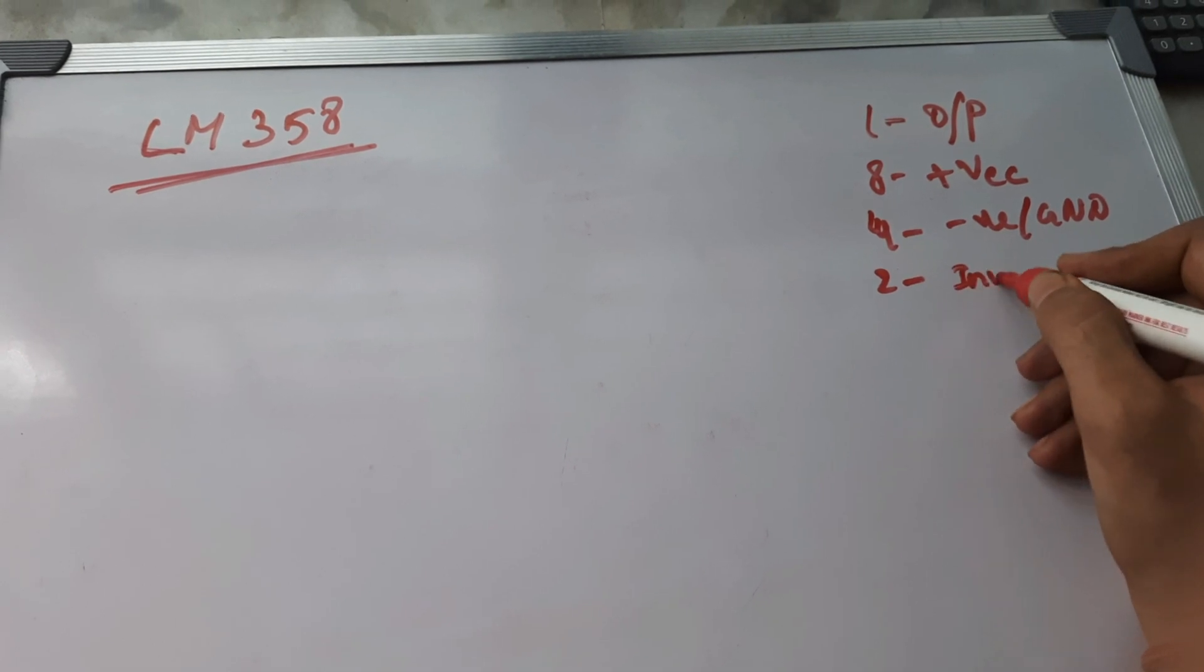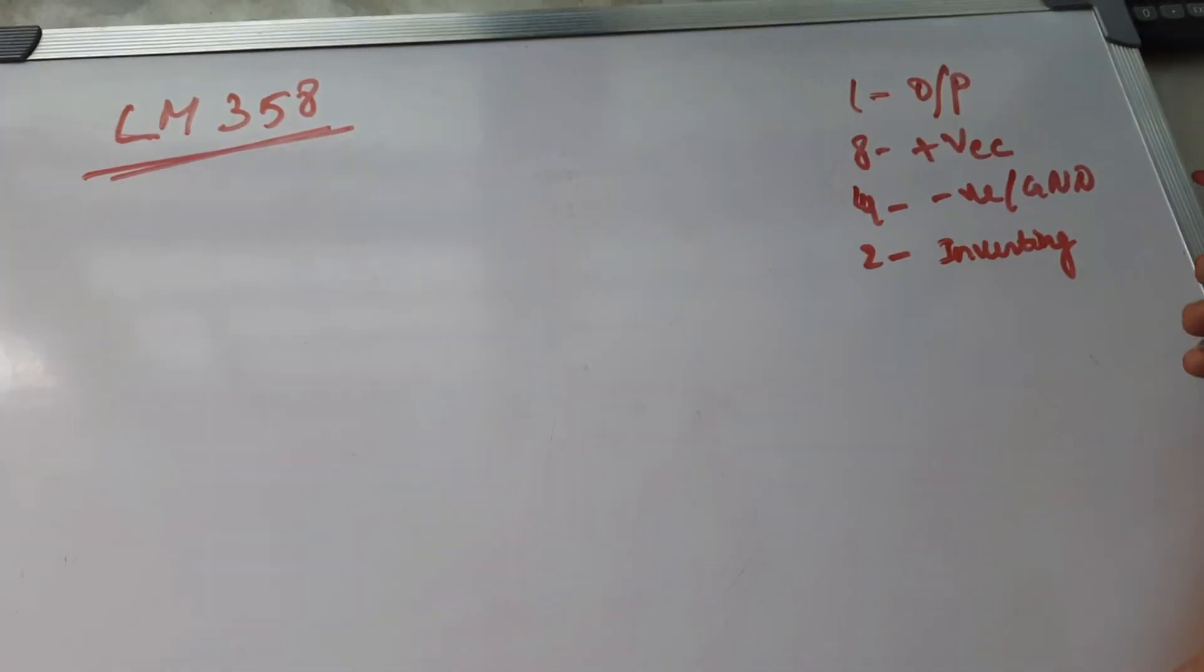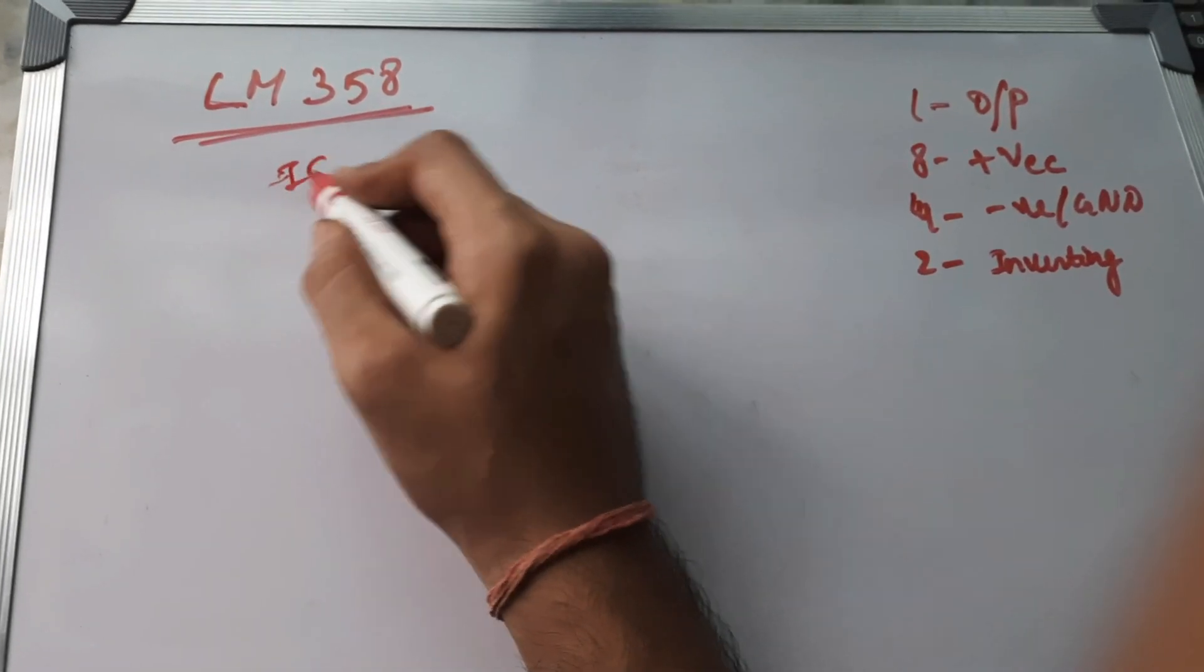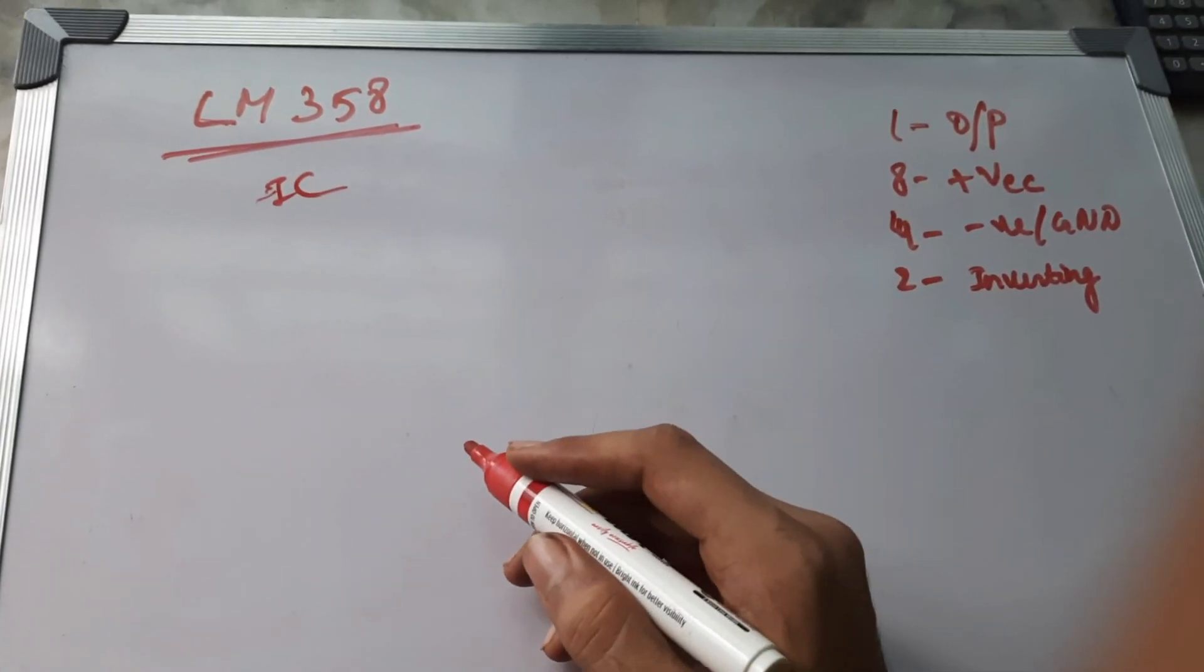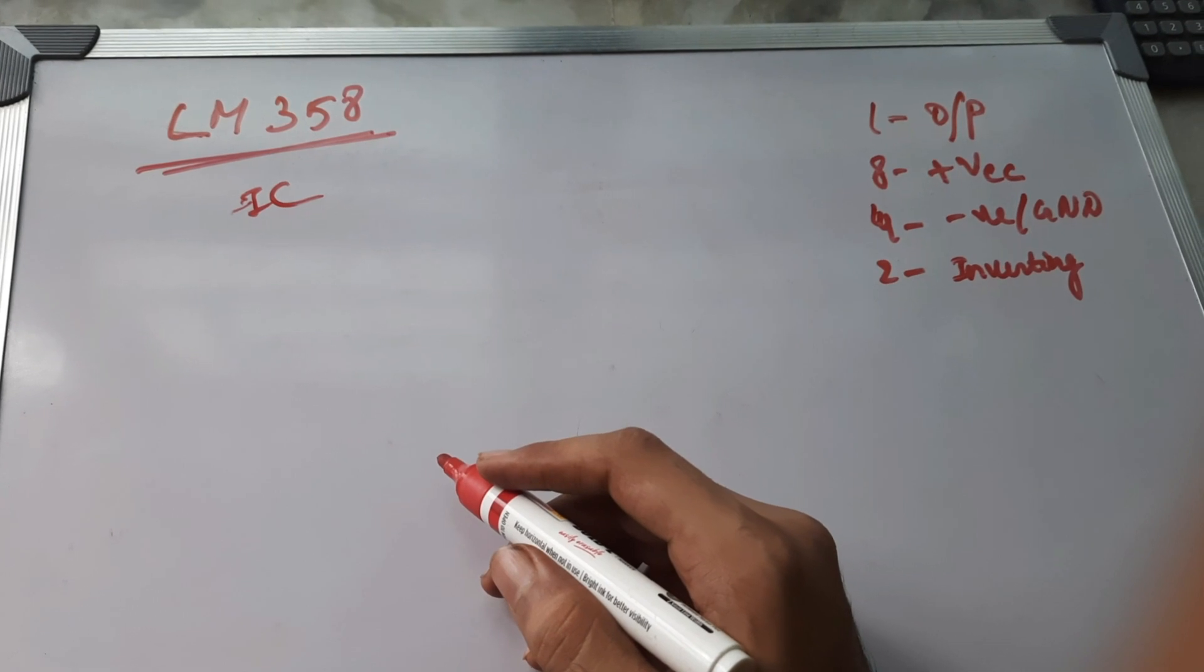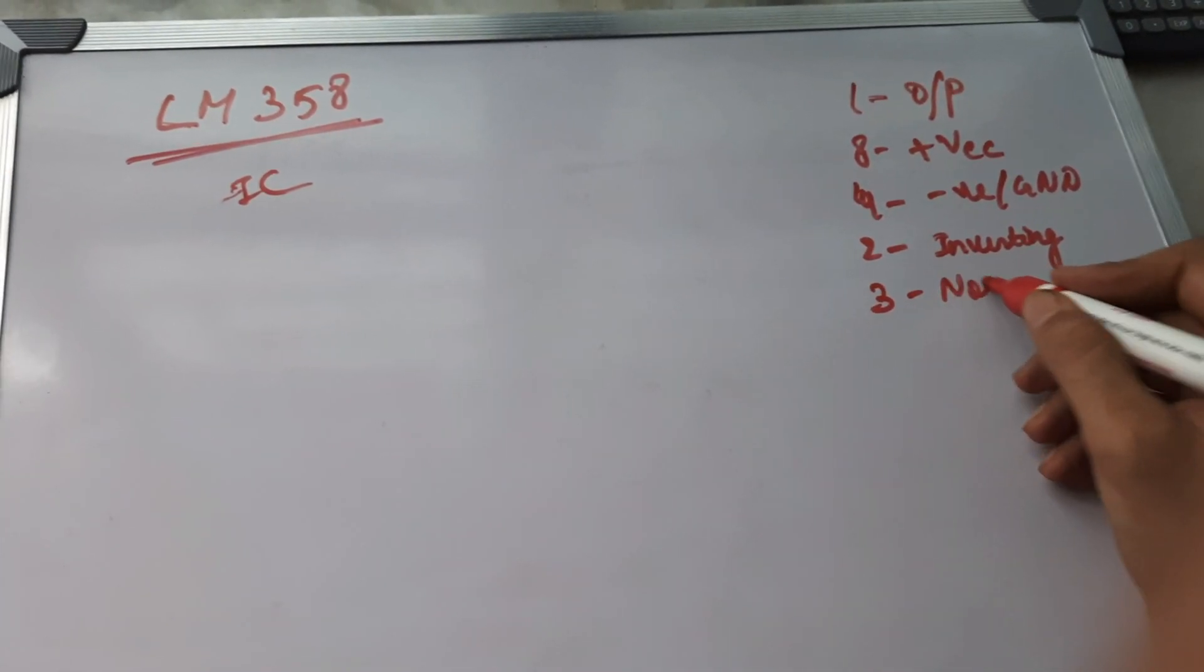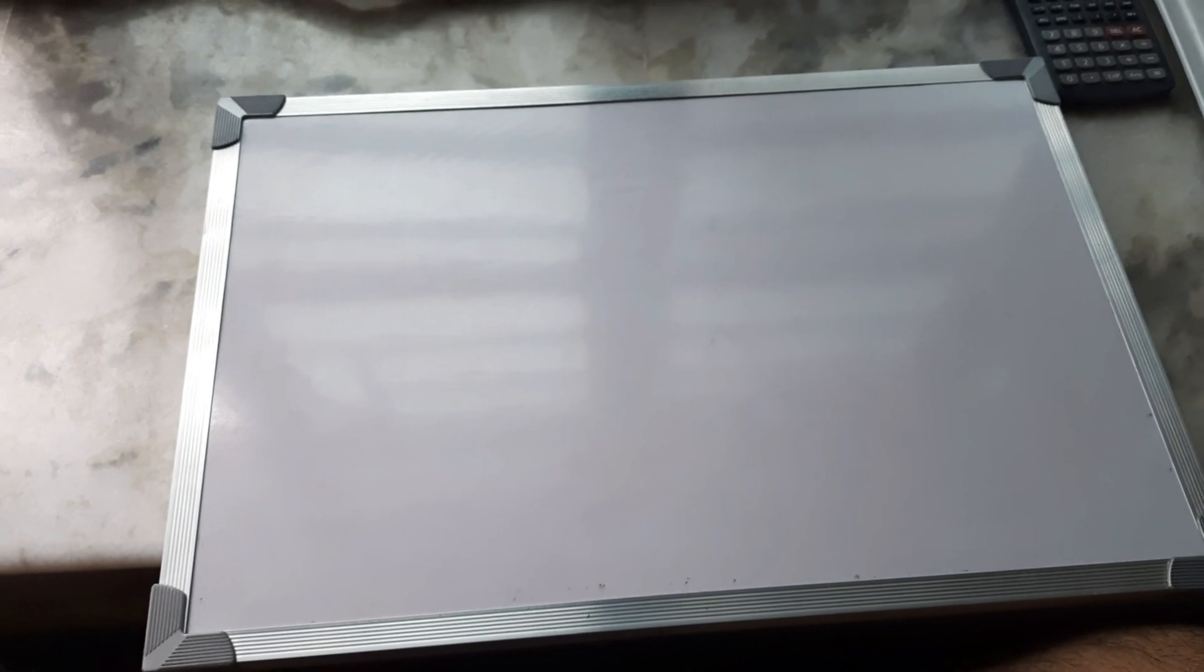And then the second one is the inverting pin of the first op-amp present there. LM358 is basically an IC which has two op-amps. Now we'll be using the first op-amp here and this third pin is the non-inverting one. So that was all about the IC which we'll be using in this circuit.